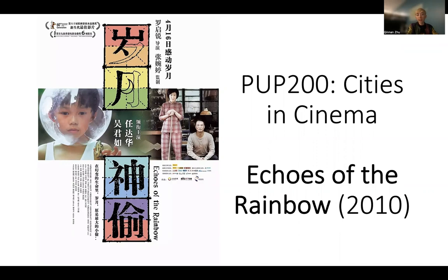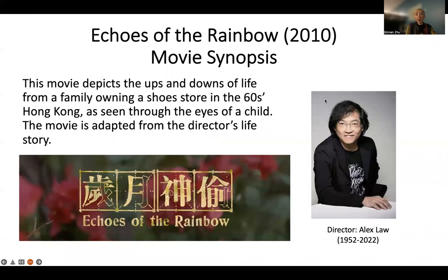Hello, everyone. Welcome to Cities in Cinema. I'm Chin Anjou, a second-year PhD student in geography from the School of Geographical Sciences and Urban Planning. The movie we are going to talk about today is The Echo of the Rainbow, directed by Alex Law in 2010. This movie talks about the ups and downs of life from a family owning a shoe store in 1960s Hong Kong, seen through the eyes of a child. The movie is adapted from the director's real-life story, and the eight-year-old boy in the movie is based on the director's childhood.